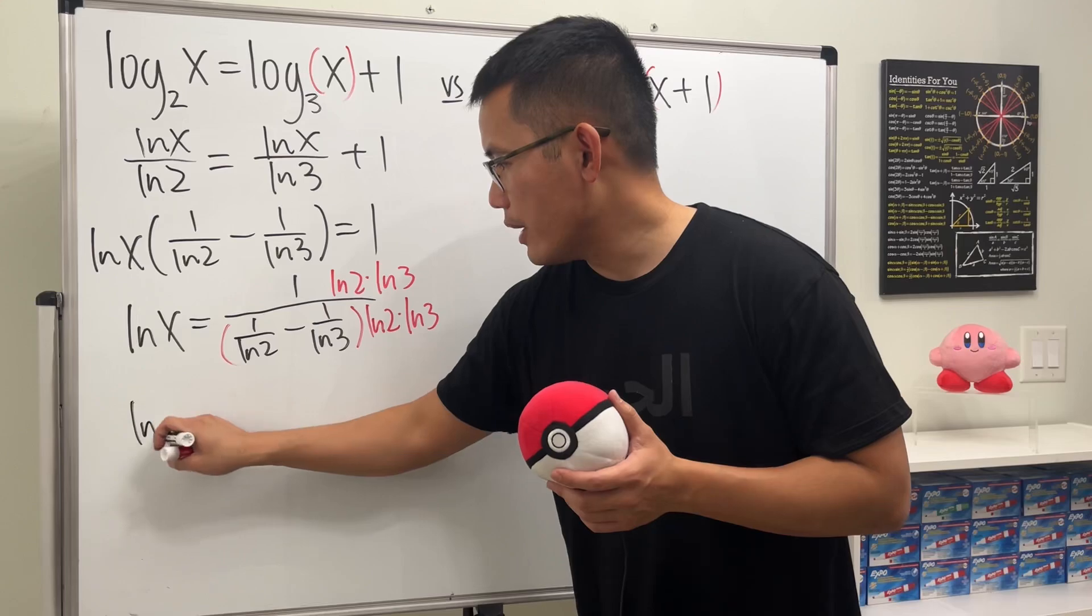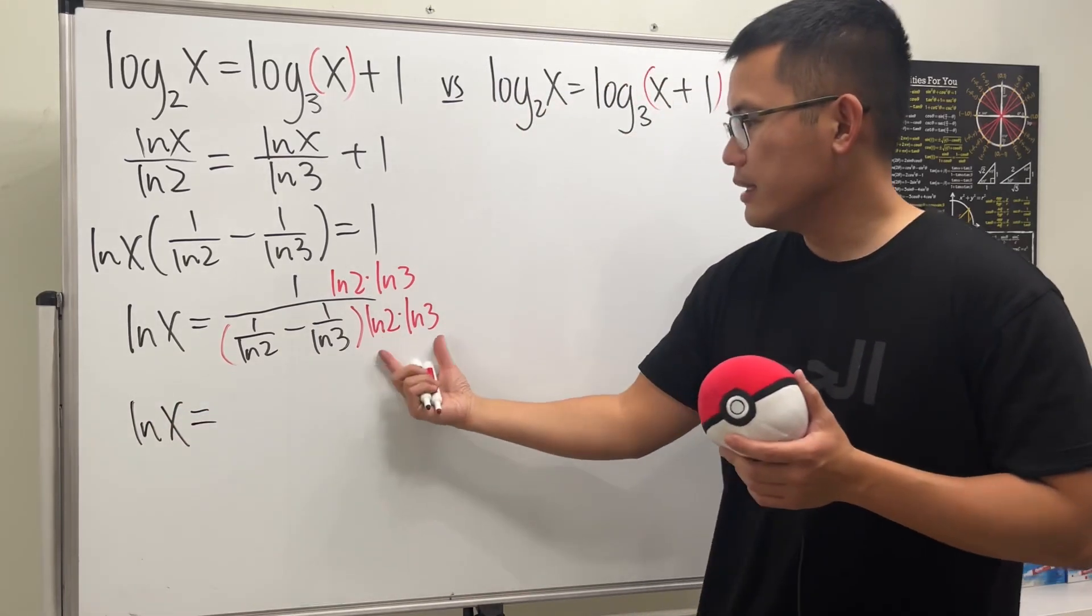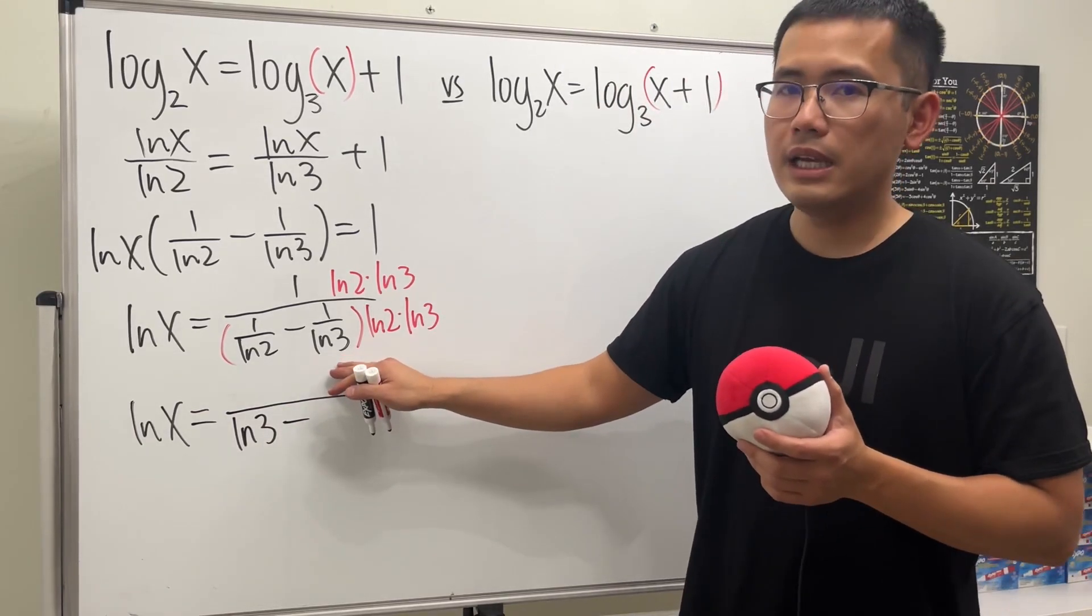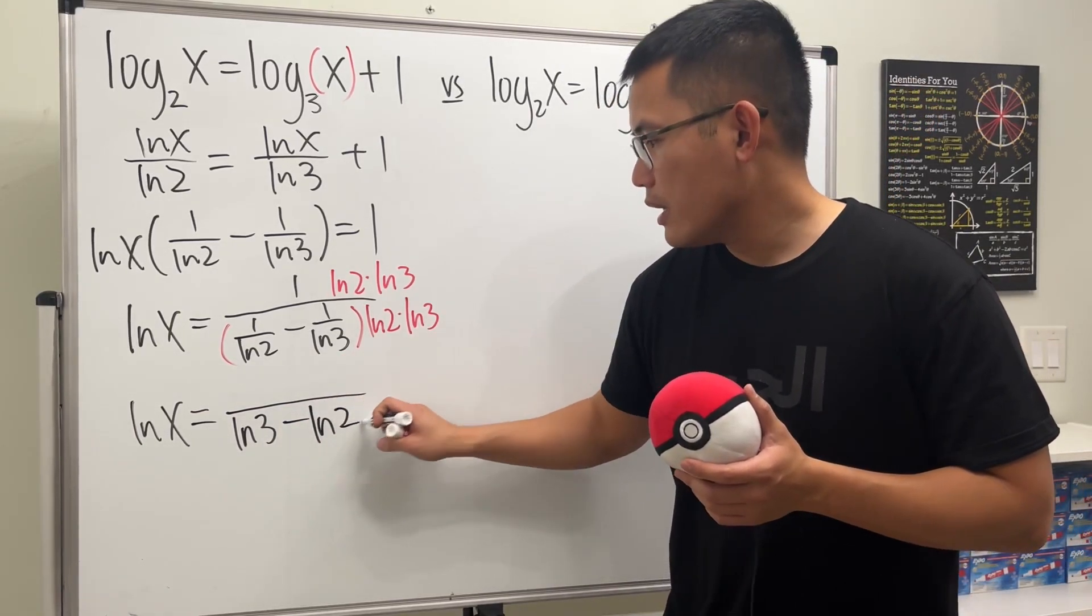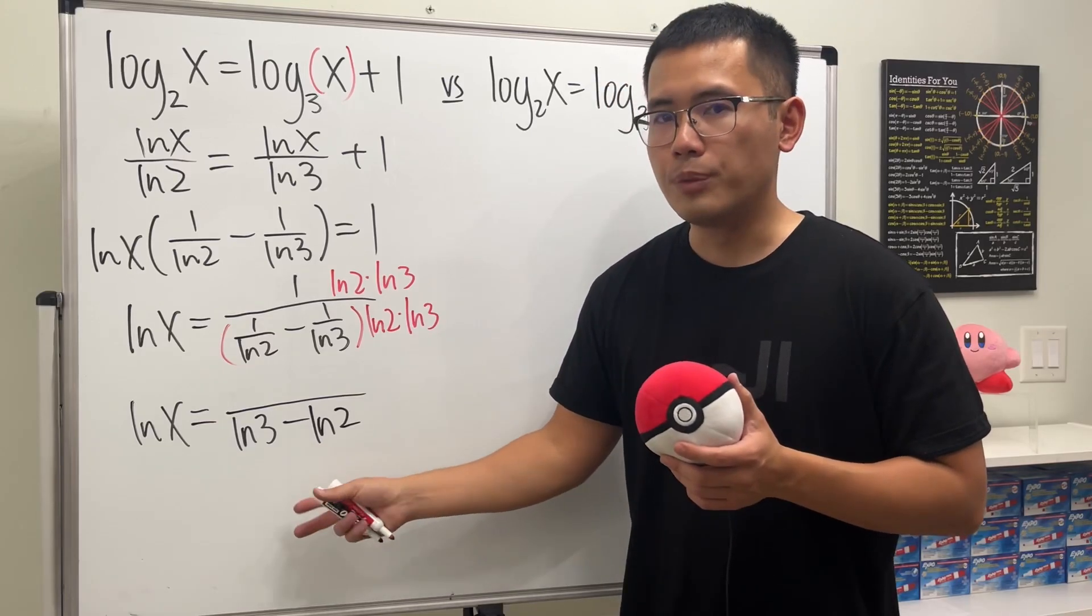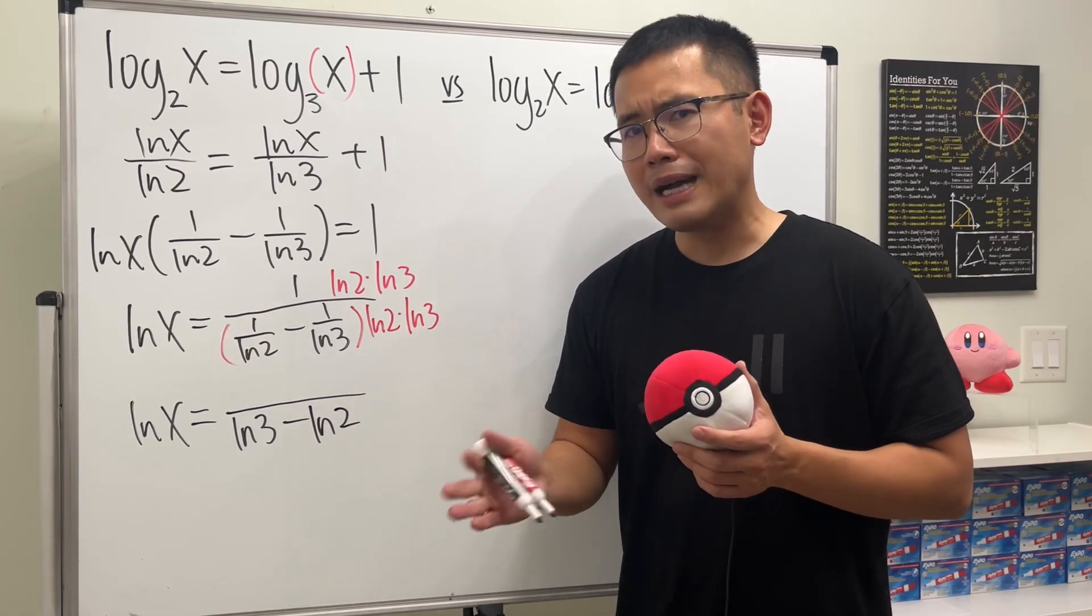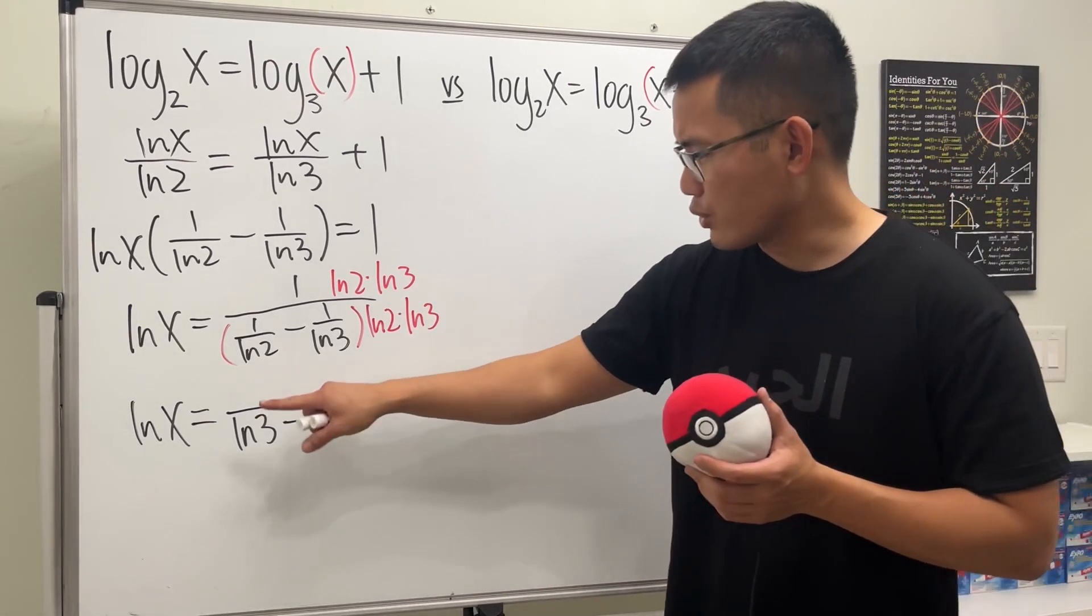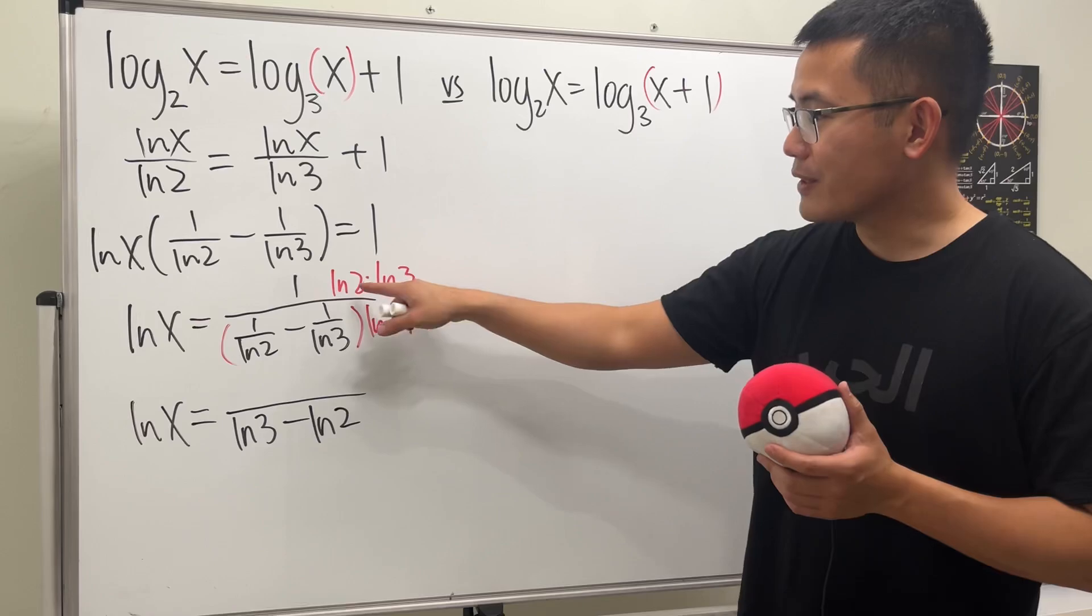Alright, so that means ln x is going to be, this times that, we will just have ln 3 on the bottom here, and then minus ln 2. And in fact, we can combine it to be ln of 3 over 2. But that will give us a fraction. Instead of a fraction, I'm not a big fan of that. So I'm just going to leave it like this.